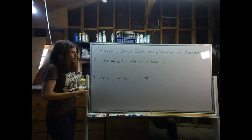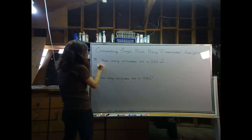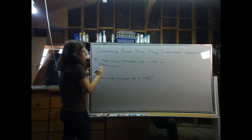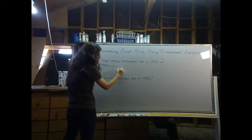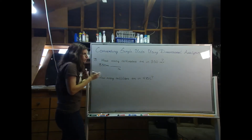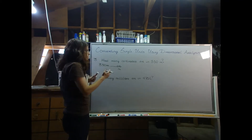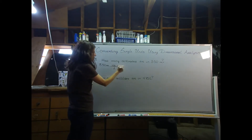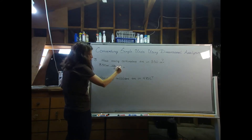First one: how many centimeters are in 3.50 meters? You're always going to start with the piece of information or the number they gave you, so I'm going to start my setup with 3.50 meters. Next to that you're going to put a fraction — your conversion factor. We're looking to get rid of meters and convert to centimeters, so we put meters in the bottom so it cancels, and centimeters in the top. The relationship to memorize: one meter has 100 centimeters. Meters will cancel meters and we'll just be left with centimeters.